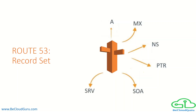SRV, or Service Locator records, define services available in the zone — for example, LDAP, HTTP, SIP, etc. — and allow for discovery of domain servers providing specific services.